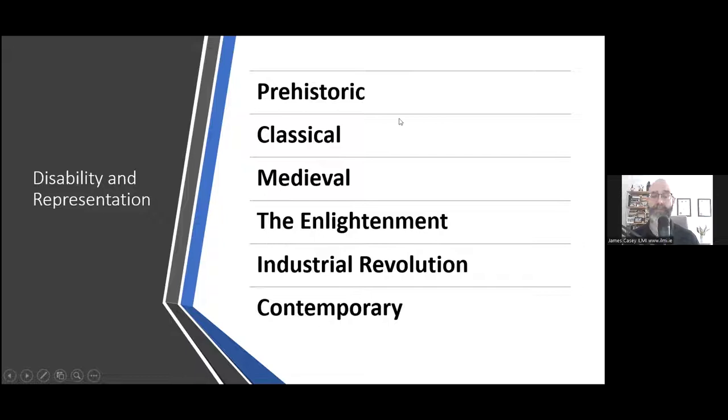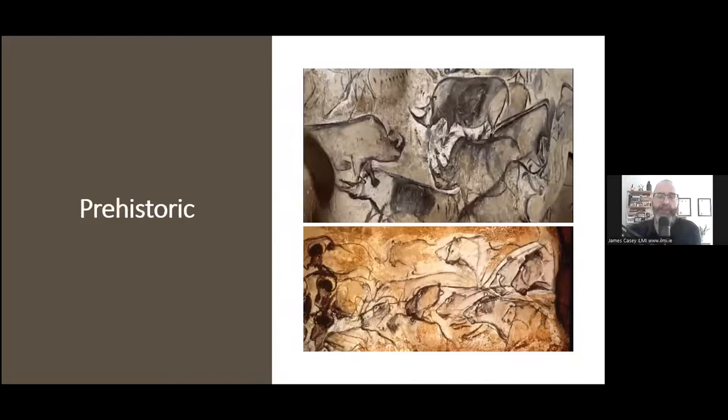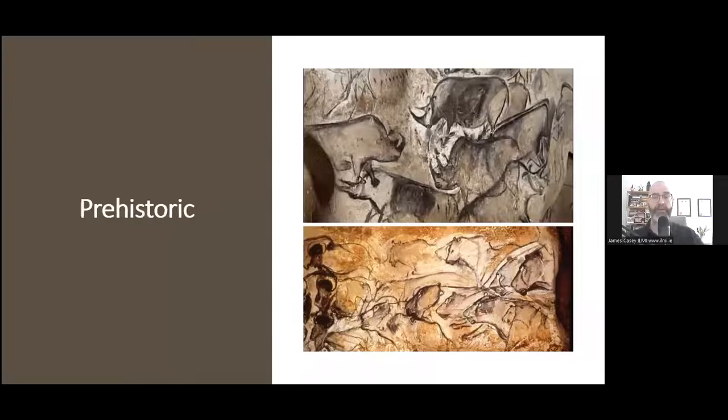Starting with the very first one: the prehistoric period. These are two images which I think are ridiculously beautiful. They are found in a cave called the Chauvet-Pont d'Arc cave in France, discovered in 1994 in the south of France, and they are part of a larger series of images within this huge cave that goes back for maybe half a kilometer. We see animals — the first image shows rhinoceroses, almost impressionistic, done with charcoal.